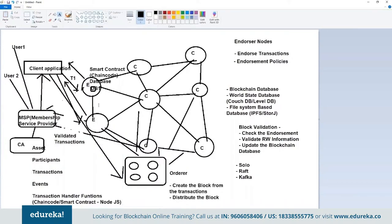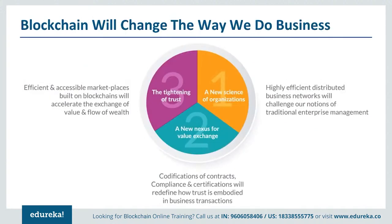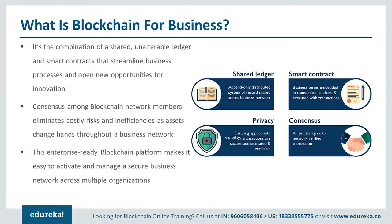In a traditional network, businesses share information with each other in an inefficient, expensive, and vulnerable way — maybe by emails, unsecured transactions — with problems of reconciliation. Blockchain-based networks solve this with consensus, provenance, immutability, and finality, giving a highly efficient distributed business network. You get codification of contracts, compliance and certifications, an efficient marketplace that accelerates exchange of information and value.